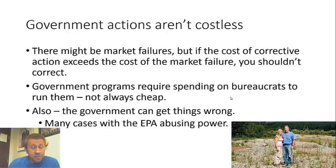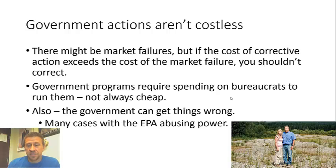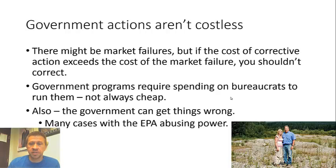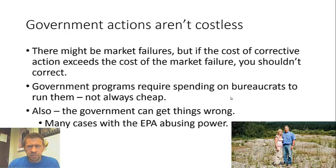There are also issues with governments having so much power that they abuse it. There are many documented cases of the EPA — the Environmental Protection Agency in the U.S. — with gross, horrendous abuse of power. The picture on screen is of the Sackett case, where the EPA attempted to seize their land because they were building a house on what they called a wetlands. This is just a case where bureaucrats had so much power and abused it. Thankfully, the Supreme Court did overrule that, though unfortunately there was no actual punishment such as jail time for the EPA officials — which there probably should have been as abuse of government power.